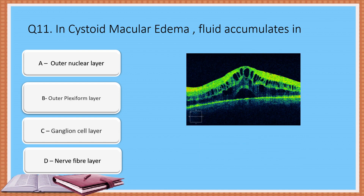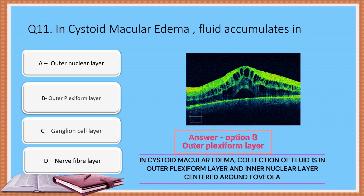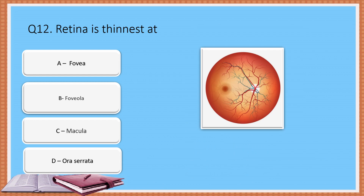Question 11: In cystoid macular edema, fluid accumulates in which of the following layers of the retina? Option A: Outer nuclear layer. Option B: Outer plexiform layer. Option C: Ganglion cell layer. Option D: Nerve fiber layer. The correct answer is Option B: Outer plexiform layer. In cystoid macular edema, collection of fluid is in the outer plexiform layer and inner nuclear layer, centered around the foveola.